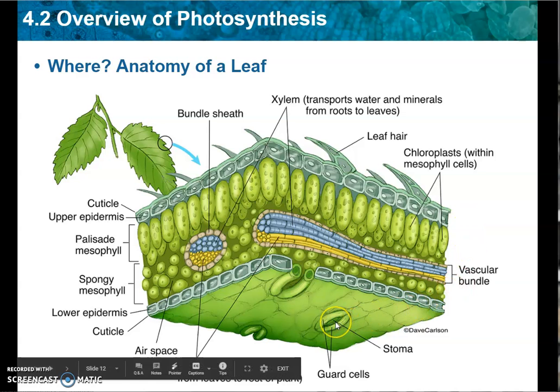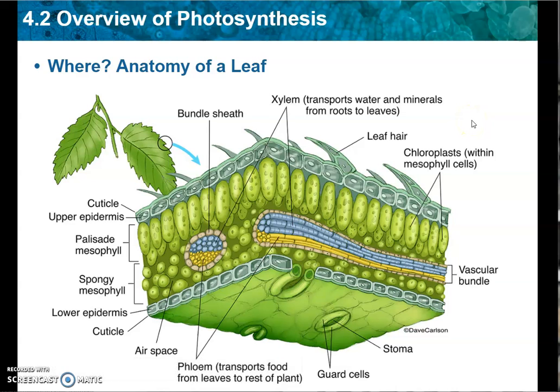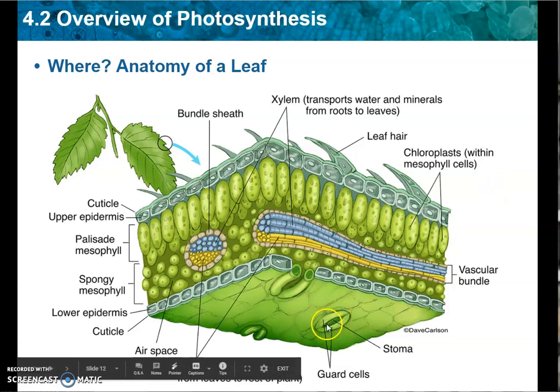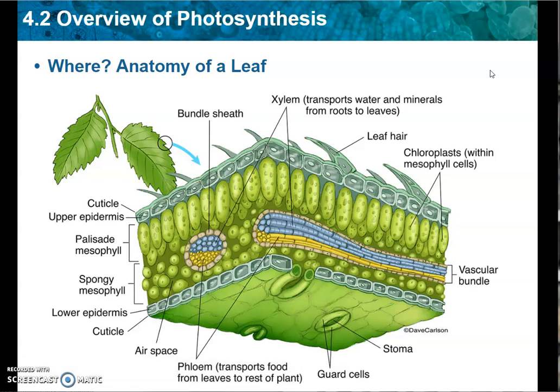Then there's the stomata — these little holes on the bottom. These pores in the leaf extend the surface area and they allow for gases to be exchanged in and out: carbon dioxide in, oxygen out. And finally, the guard cells that are right next to that. The guard cells are responsible for opening or closing the stomata depending on the temperatures. Water loss is dependent on those guard cells functioning. If they're open during the hottest part of the day, the water evaporates out and the plant wilts.